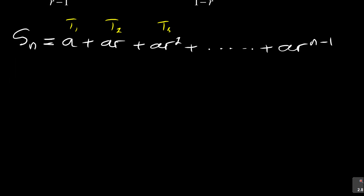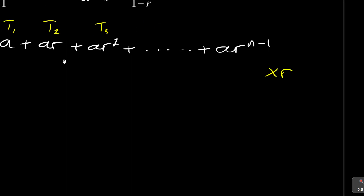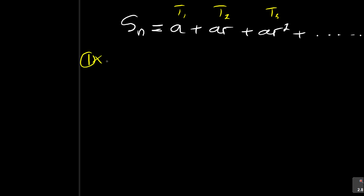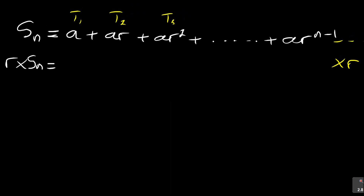Now, the next thing needed is to multiply this series by r, the common ratio. So we call this equation one, and we multiply equation one by r. What we're going to have is: r times Sn is equal to — because I'm multiplying by r — so a times r becomes ar.